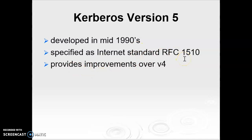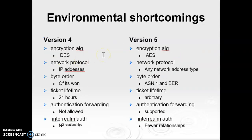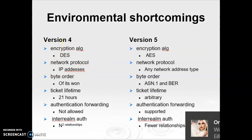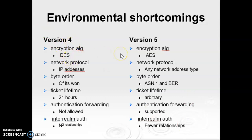Kerberos version 5 is standardized as RFC 1510 and has several improvements over version 4. First, regarding encryption system dependence: version 4 uses DES, whereas version 5 primarily uses AES (Advanced Encryption Standard). In version 5, the ciphertext is tagged with an encryption type identifier, meaning any encryption technique can be used. Encryption keys are also tagged with type and length, so different algorithms can be used — not necessarily only DES.